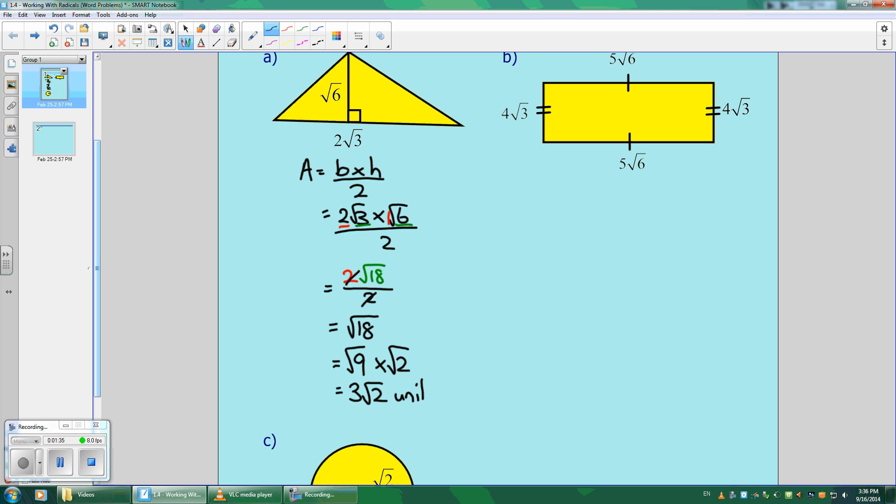I'm going to put units because I don't know if it's centimeters or meters, and then squared because we're finding the area. Notice that I didn't change this to a decimal because with decimals you're just rounding. So I don't want to round. I just want everything to be nice and an exact answer. And that's what that 3 root 2 represents.